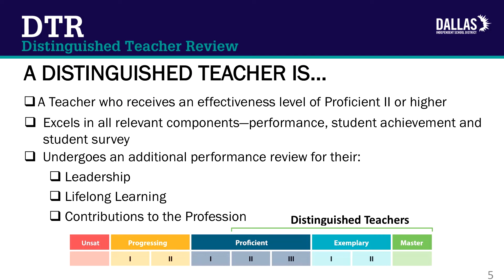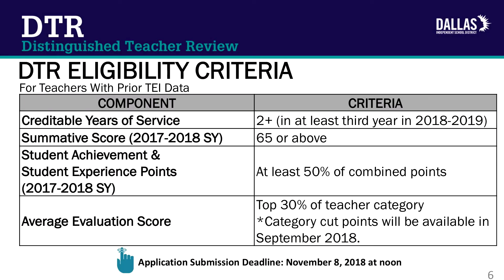Teachers meeting the DTR eligibility criteria are notified of eligibility to undergo DTR for the 2018-2019 school year on their TEI scorecard and via email. The DTR eligibility criteria for most teachers in Dallas ISD with prior TEI data are: 1. Teachers must be in at least their third year of teaching at the start of the 2018-2019 school year. 2. Teachers must have earned a summative score of 65 or above for the 2017-2018 school year. 3. Teachers must have earned at least 50% of their combined student achievement and student experience points for the 2017-2018 school year. 4. Teachers must be in the top 30% of their teacher category based on their average evaluation score.